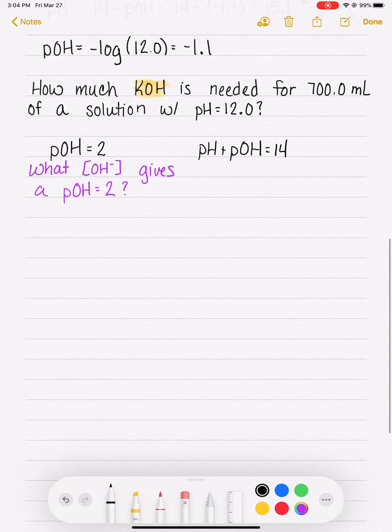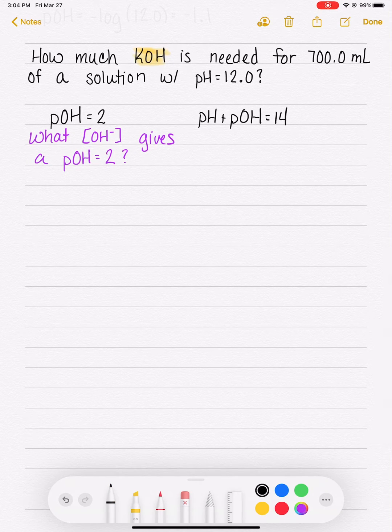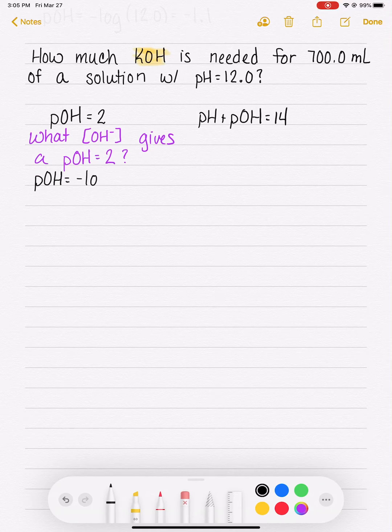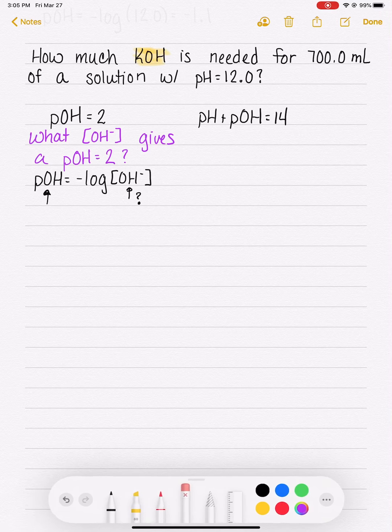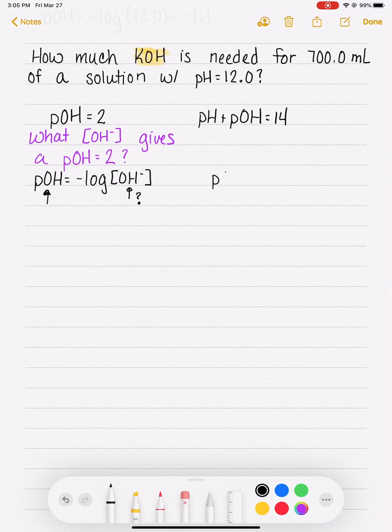To solve this type of problem, we are going to use the opposite of the pOH calculation. So we can't use this calculation or this equation directly right here because we know the pOH and this is the thing that we're trying to figure out. Instead of using that calculation, we are going to use the anti-log.